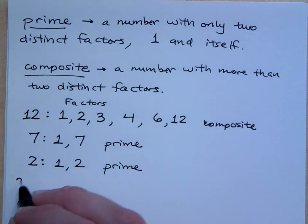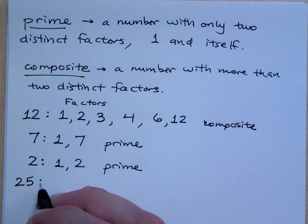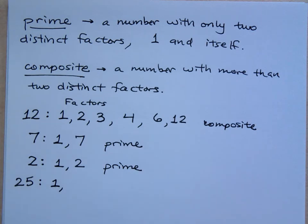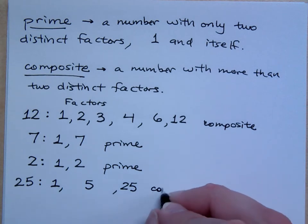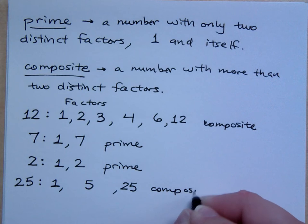Okay, what about 25? What are its factors? I'll give you a hint. One and 25, right? Is there anything else? Five and five, right? Do I need to write two fives? Are there any other factors? Or is it just one, five, and 25? It's just those three numbers, right? Is this number prime or composite? Composite.